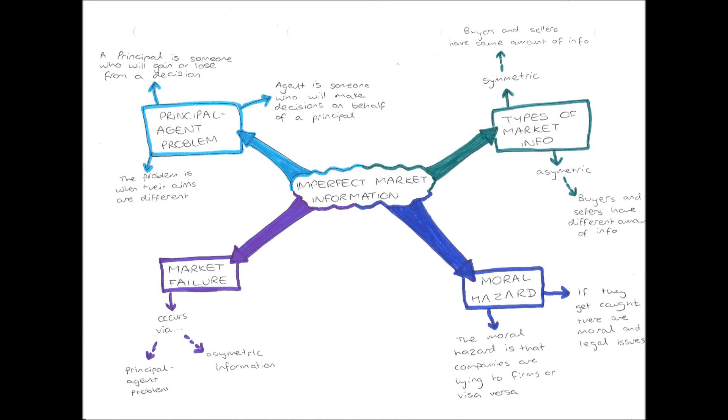Hello everybody and welcome to this microeconomic video on imperfect market information. Firstly, in the top left we have the principal-agent problem, part of our imperfect market information. The principal-agent problem is divided up into a few parts.